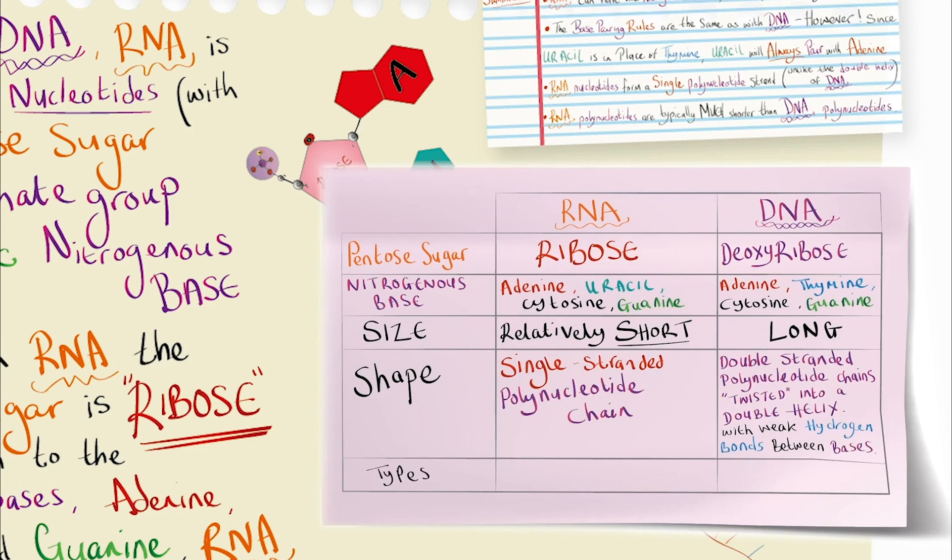And the types of these molecules - we know that RNA exists in three forms: messenger RNA, transfer RNA and ribosomal RNA, whereas DNA is just DNA.